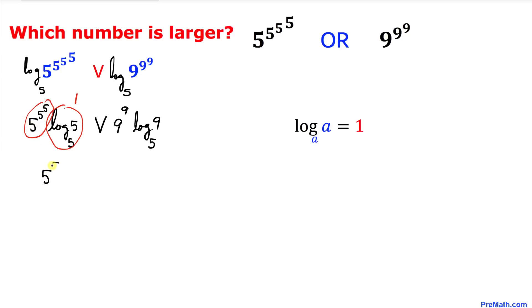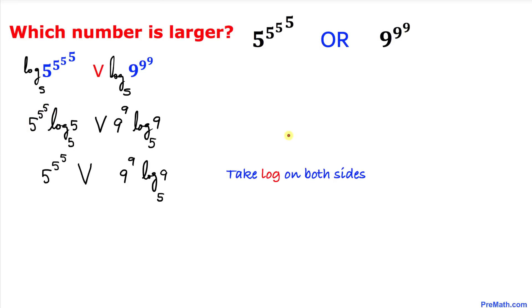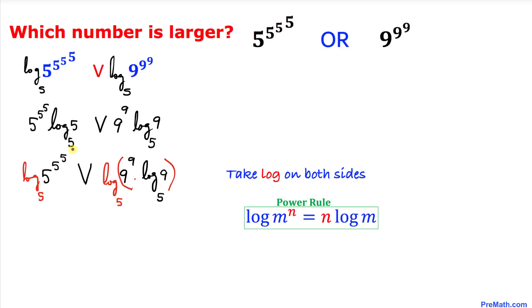So the left hand side simply becomes 5^(5^5) versus 9^9 times log base 5 of 9. Now let's take the log base 5 on both sides again. Focusing on the left hand side, we have 5^(5^5) where 5^5 is the exponent, and by the power rule we move this exponent to the front, giving us 5^5 times log base 5 of 5.